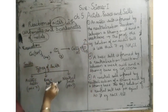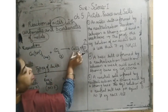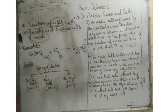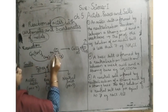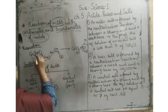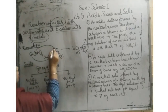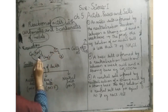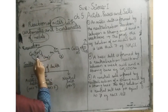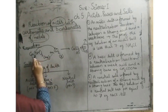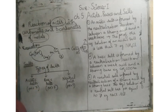We get CaCO₃, which is calcium carbonate. How do we get calcium carbonate? Calcium goes and gets attached with CO₂, but one extra oxygen is needed. There are two oxygens in Ca(OH)₂, so one oxygen goes to CO₂ making it CO₃, and the remaining H₂ with the other oxygen gives us H₂O.